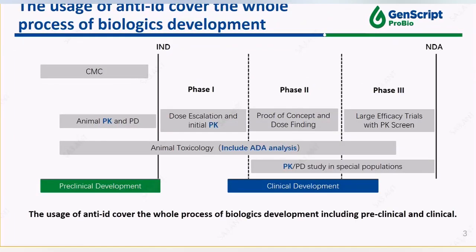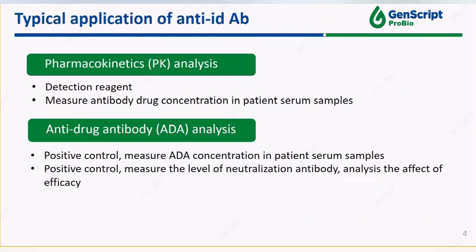Here is a roadmap recommended by FDA regarding the development of a therapeutic antibody. PK and ADA analysis are considered the most crucial part throughout the whole preclinical and clinical study. PK is to measure the antibody drug level in testing samples, while ADA is to measure anti-drug antibody and neutralizing antibody in testing samples.